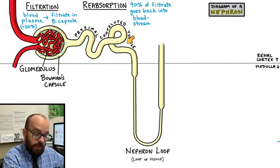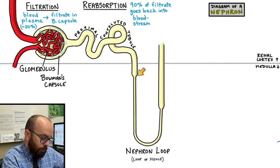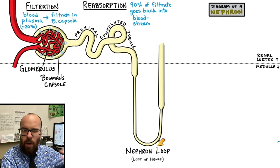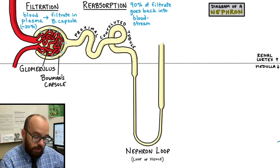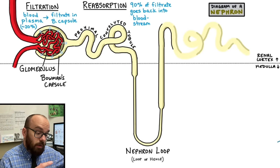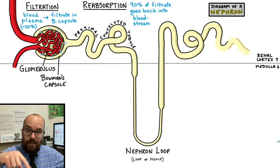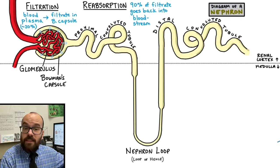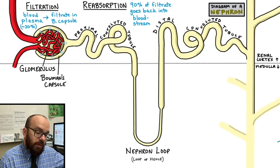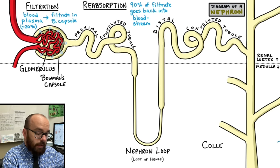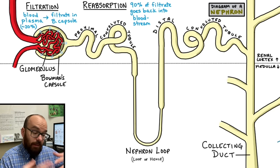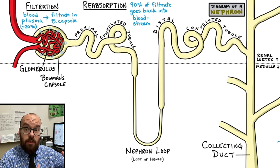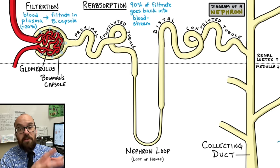So far, everything has been in the renal cortex — the outer layer of the kidney. But now this loop dips down into the medulla and then comes back out into the renal cortex. There, the nephron loop connects to the distal convoluted tubule — notice it's kind of windy and convoluted, just like the proximal one. Once it gets to the end of the distal convoluted tubule, it connects with the collecting duct. There are lots of branches coming into it because there are lots of nephrons that all connect to the same collecting duct. All the urine being filtered out collects into collecting ducts, which join together to form the calyx, connecting to the ureter to bring it down to the bladder.